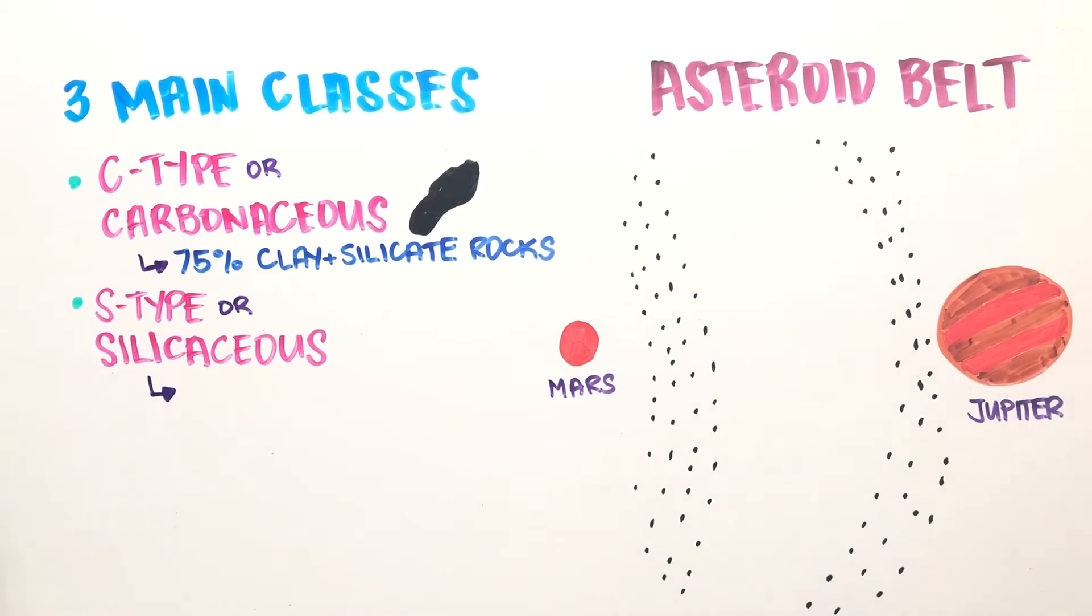S-type or silicateous asteroids are greenish or reddish in color made up of silicate materials and nickel iron and are found in the inner belt.